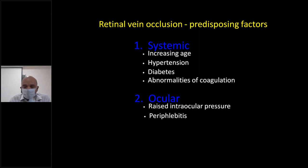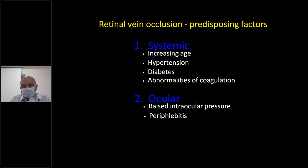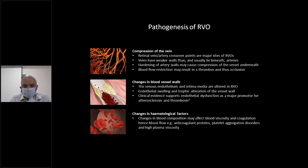As far as ocular factors are concerned, there can be inflammation of the veins — phlebitis — due to infection, inflammatory conditions, connective tissue disorders, or arthritis. There can be vasculitis affecting the veins. An example is Eales disease. When intraocular pressure rises beyond a particular limit, blood flow is affected, which can also lead to occlusion.